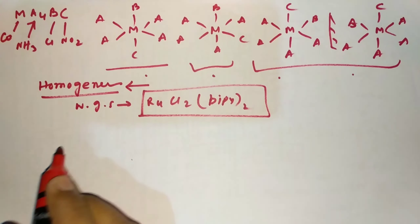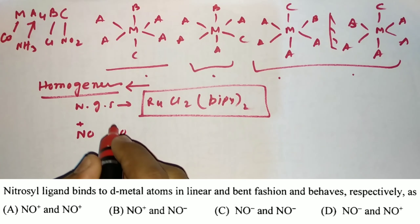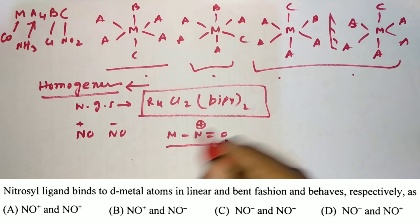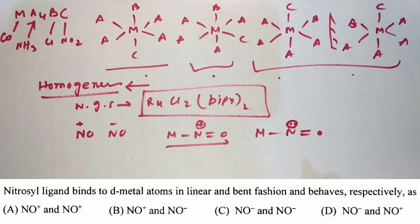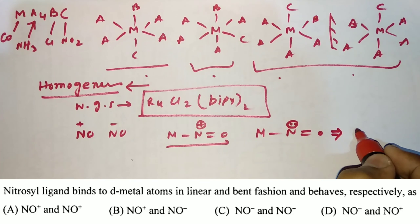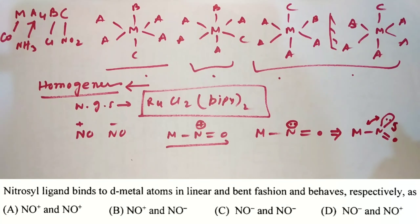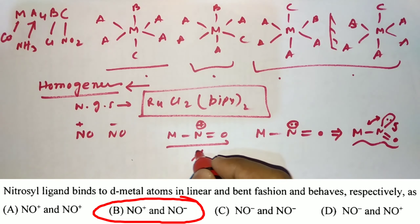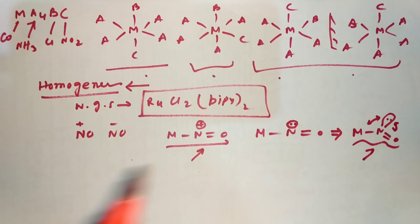The next question is about linear and bent NO ligands. For NO⁺ coordinated to a metal (M-N=O⁺), the geometry is linear. For NO⁻ (M-N=O⁻), there is a lone pair causing repulsion, making the geometry bent. Option B is correct: NO⁺ gives linear coordination and NO⁻ gives bent coordination.